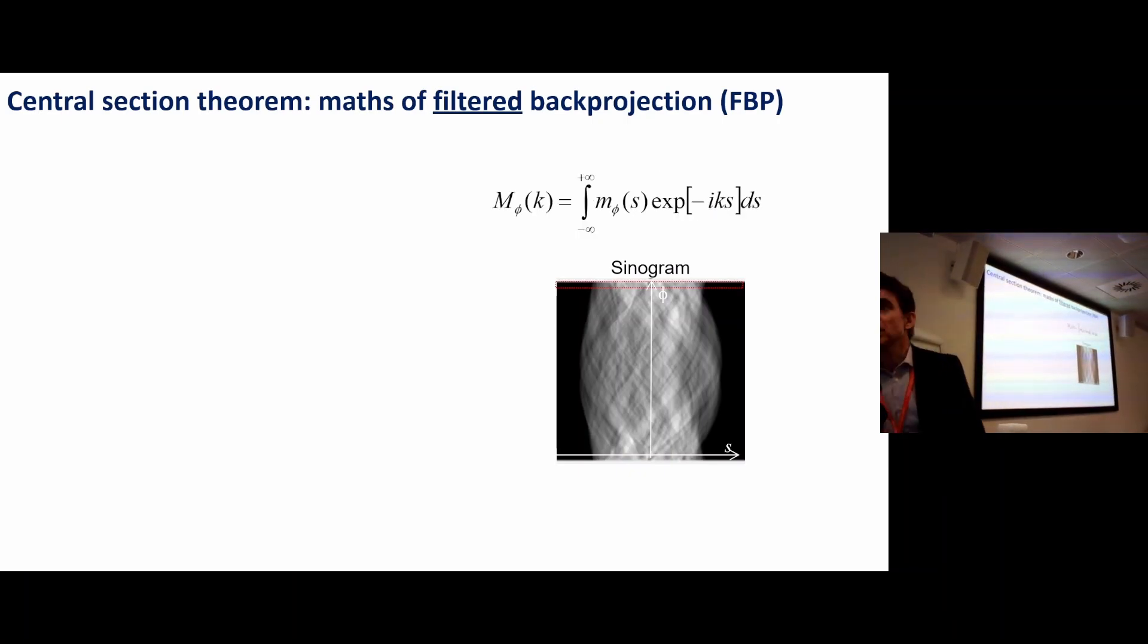What I can do is take a Fourier transform of m phi s. So m phi s is a fixed phi, fixed value of phi, we've got a 1D function of s. Definition of the Fourier transform is that we multiply it by the complex exponential that we want to find the coefficient for. If we want to find the coefficient capital M at spatial frequency k, then we multiply m of s with exponential minus iks, and once you know the modulation you sum it all up, gives you the amount of that frequency that's present in that row of the sinogram, that projection.